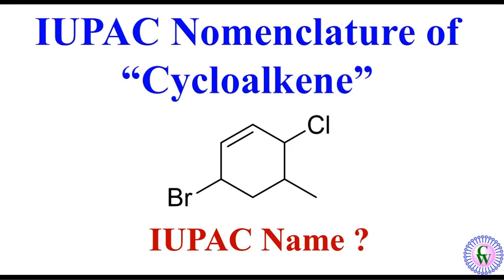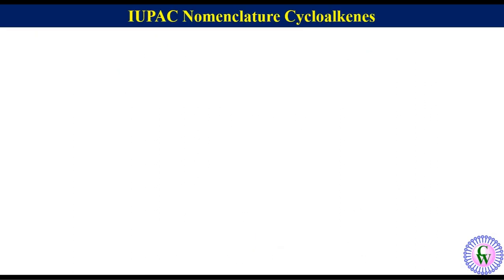Hello and welcome to my YouTube channel Kemvis. In this video we are going to discuss IUPAC nomenclature of cycloalkenes. Cycloalkenes are the compounds having one or more C=C double bonds inside a ring but having no aromatic character.